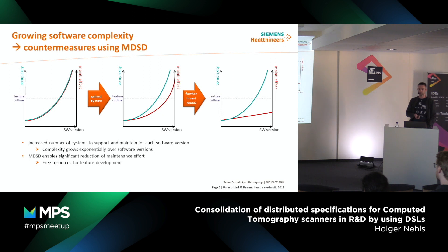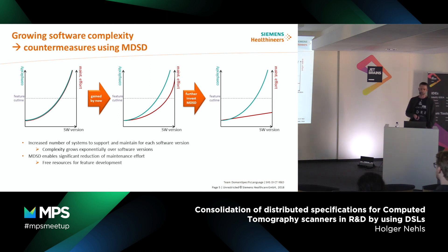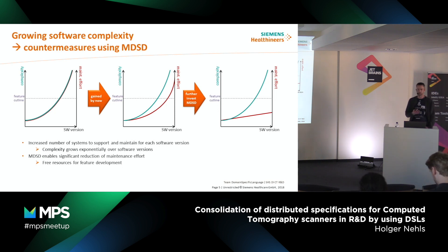We have already seen that we can flatten down this curve with multiple approaches. And when we further invest in this approach, we are sure we will be able to flatten it down to a linear graph. The final growing can be addressed with other principles and activities. So we finally want to free the resources for feature development and not for maintenance.